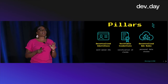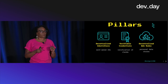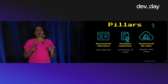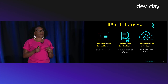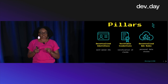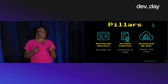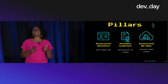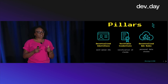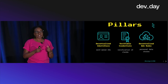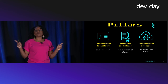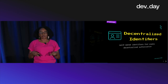Web 5 is comprised of three core pillars, all of which are based on open web standards: decentralized identifiers, also known as DIDs, verifiable credentials, and decentralized web nodes. I'll go through each one of these in more detail.